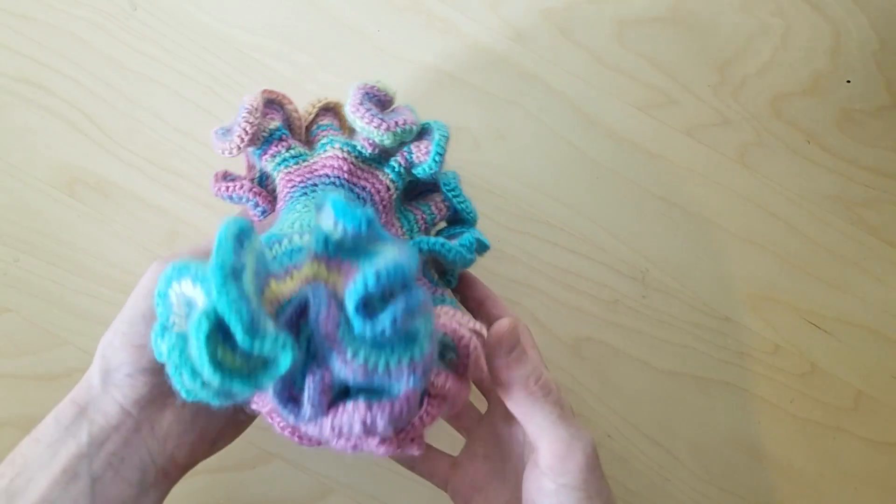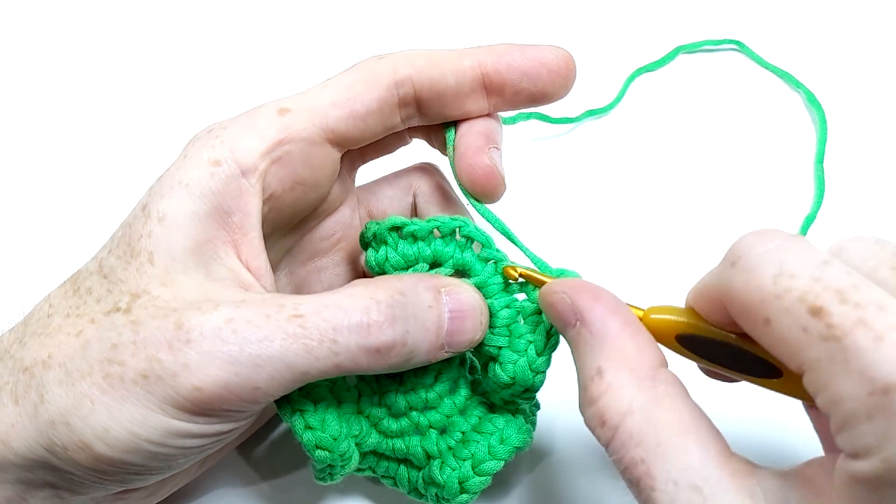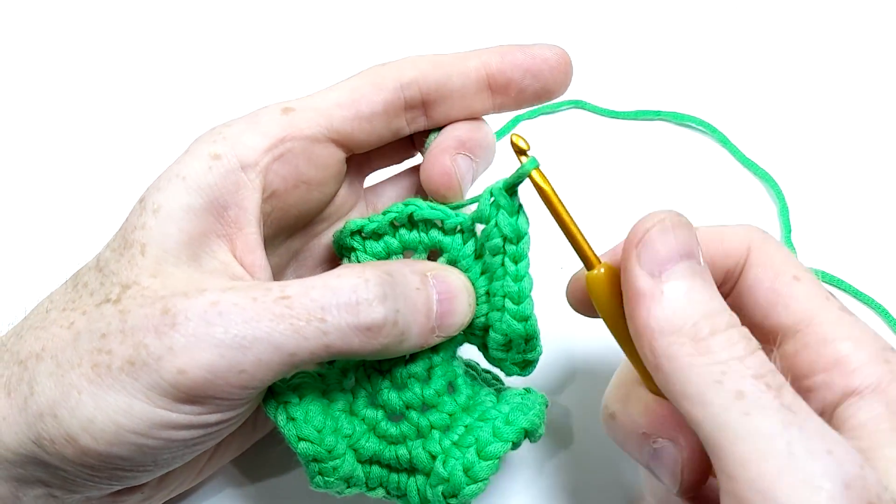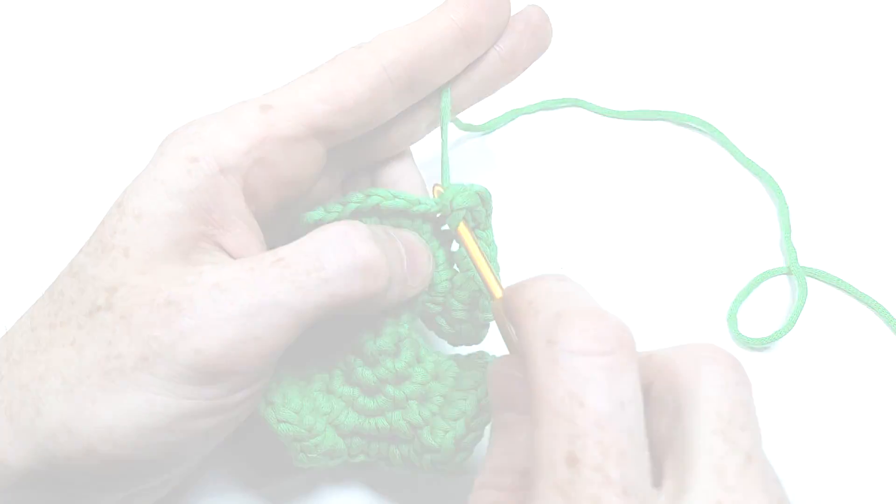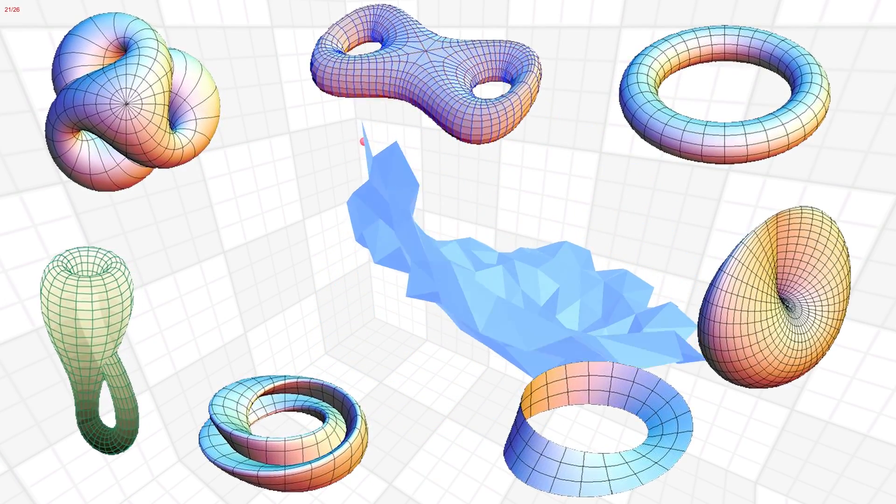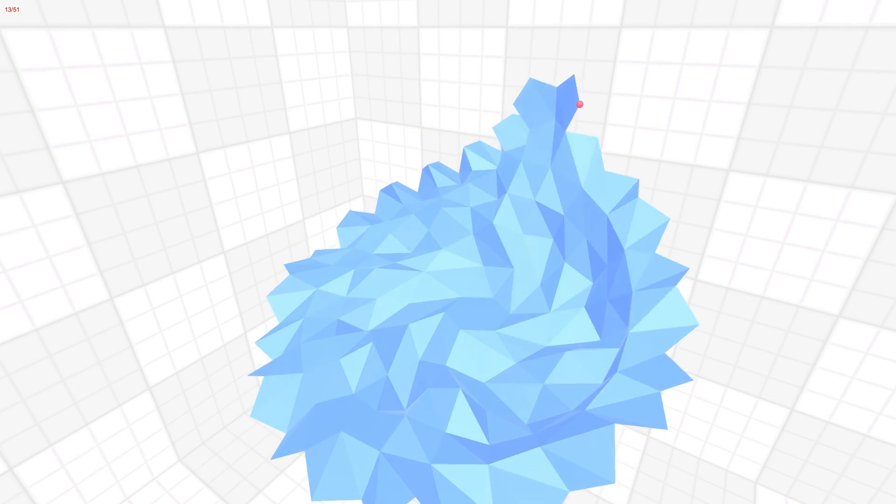In my Hyperbolica devlogs, I mentioned you can build a model of hyperbolic geometry using crochet, but I never learned how to do it myself. Until now. It's actually really easy, and I'll show you how to do it in this video. But there's an even more fundamental connection between crochet and topology, so let me show you why it's so cool from a programming and mathematics perspective.